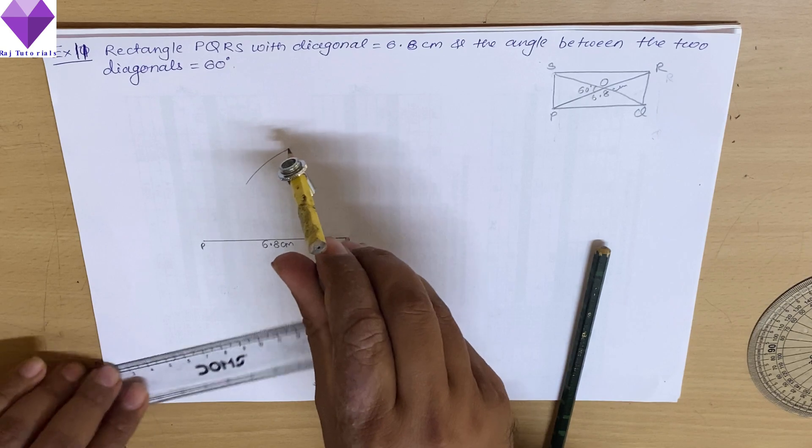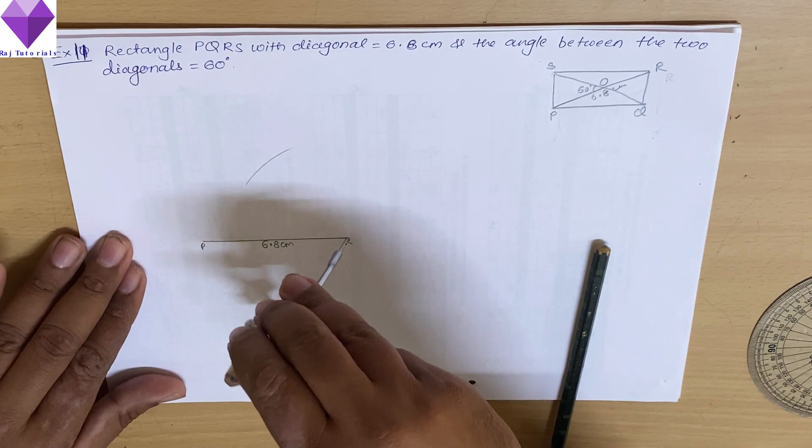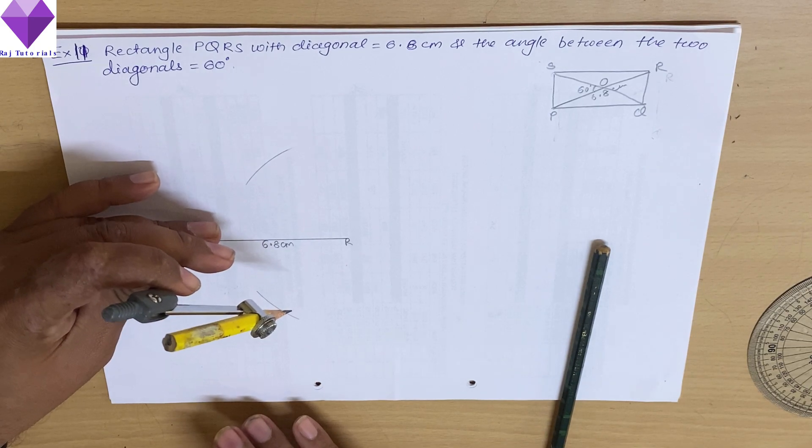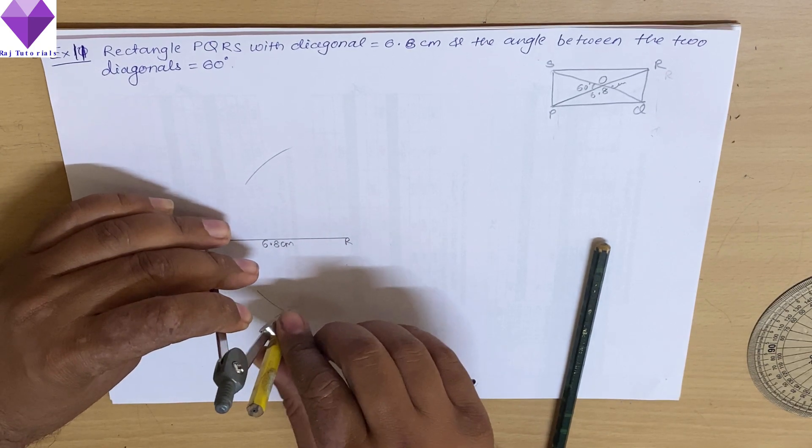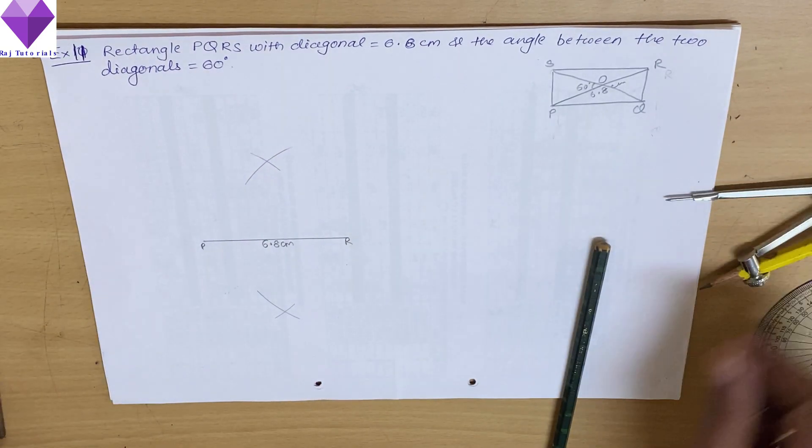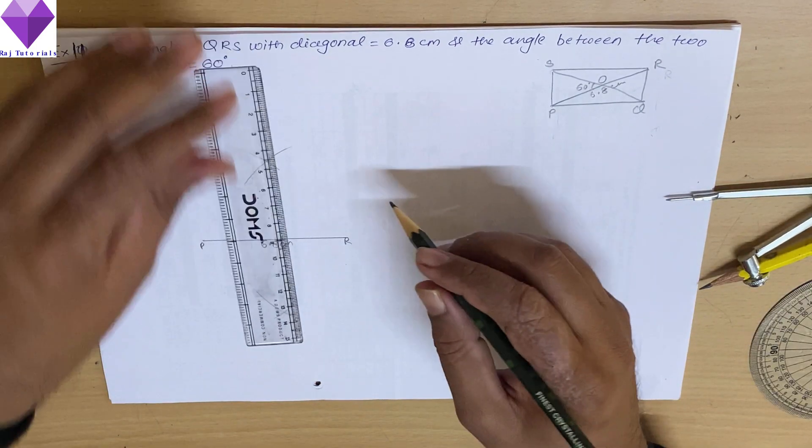one arc up, one arc down from R point. And in the same way with P as center, one arc up, one arc down without changing the radius. Now I will be extending this line.